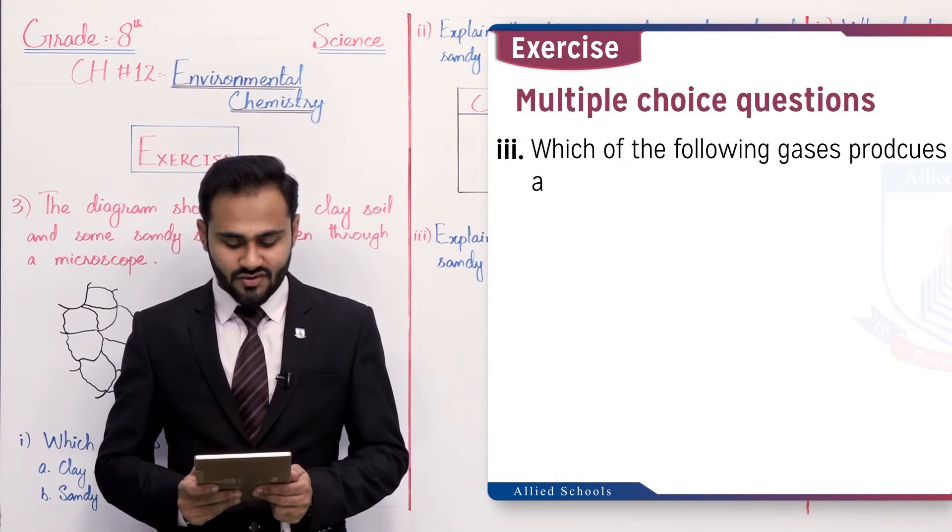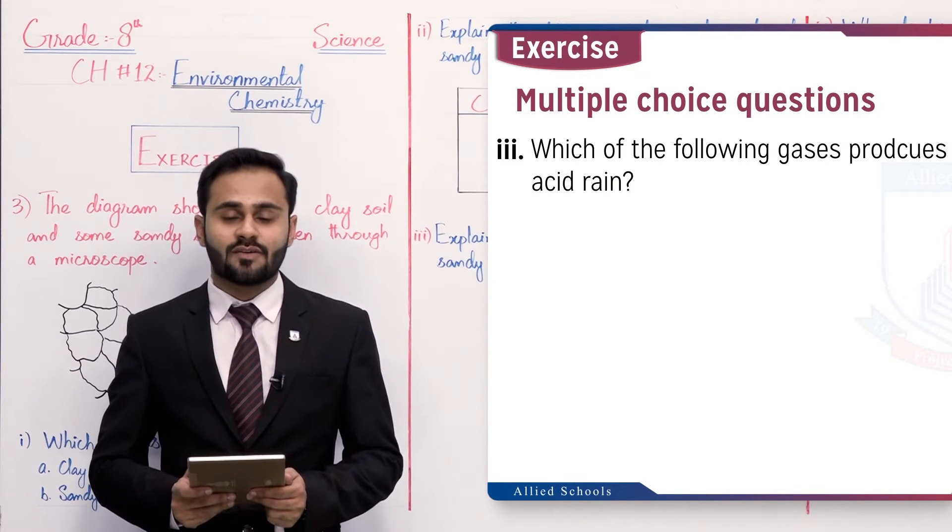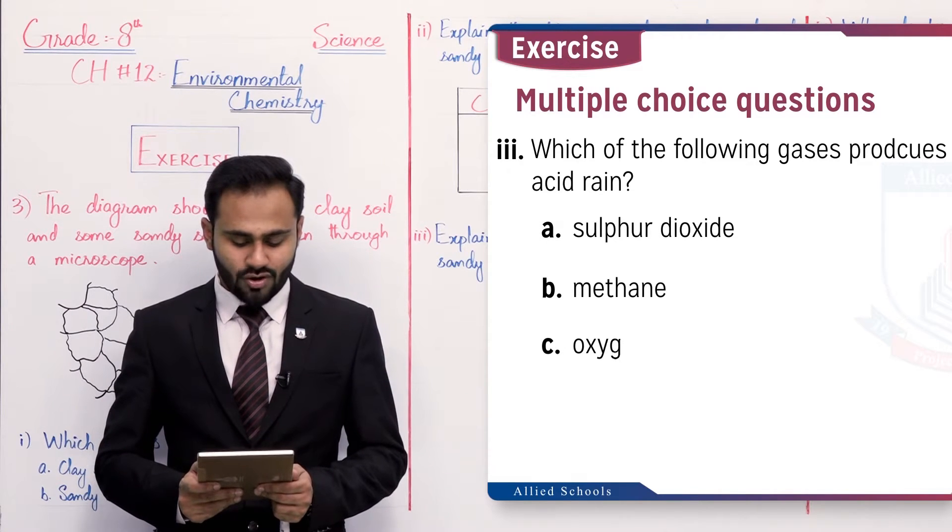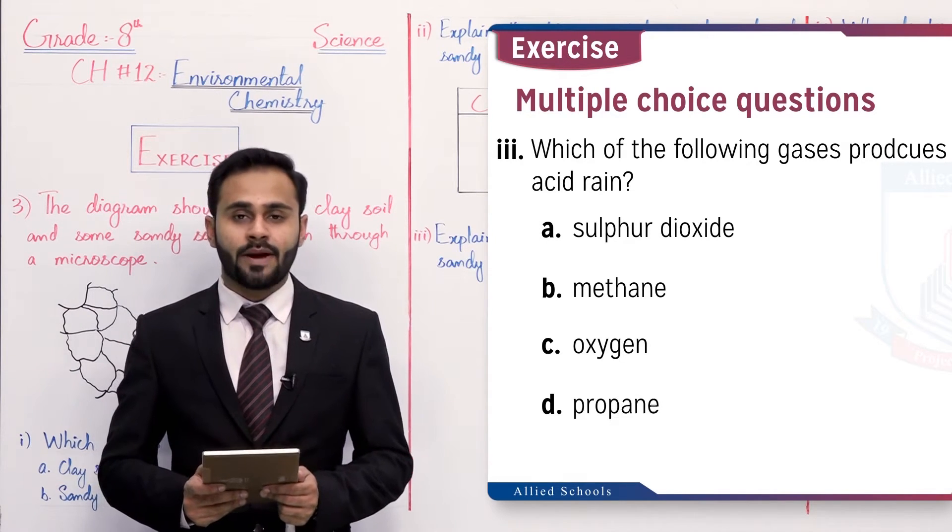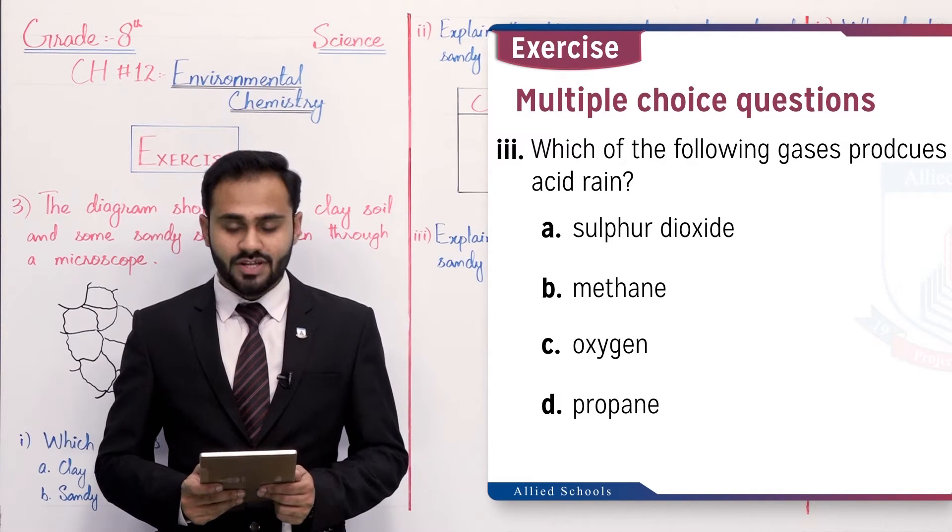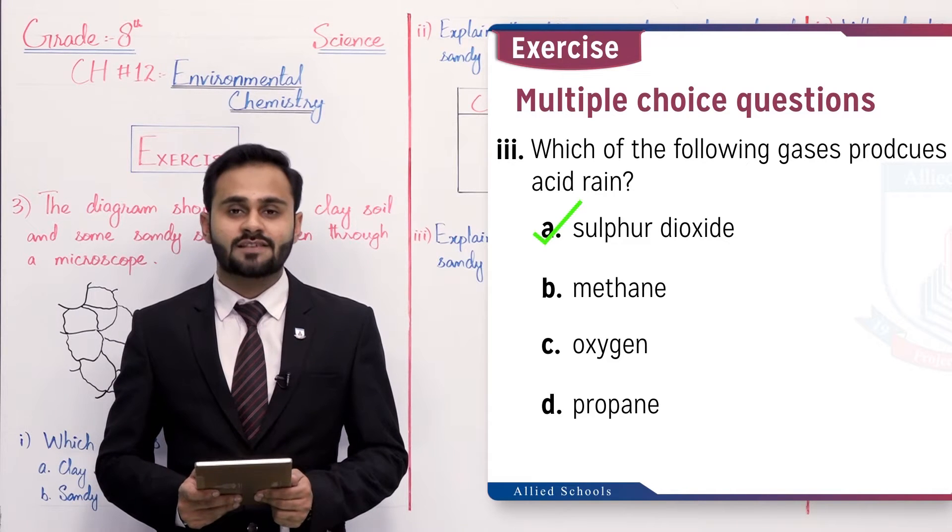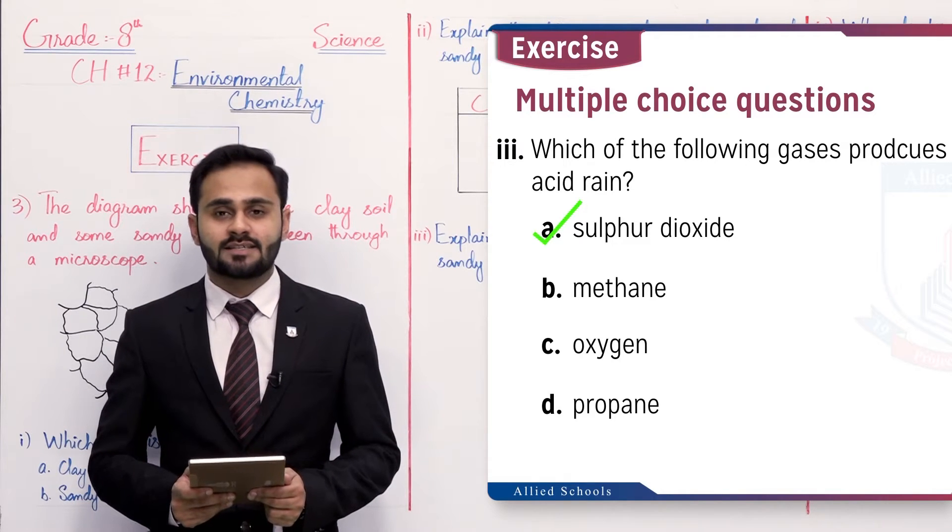MCQ number three: which of the following gases produce acid rain? Konsi gases acid rain produce karti hai? Option A: sulfur dioxide, B: methane, C: oxygen, and D: propane. The option A is correct which is sulfur dioxide. Sulfur dioxide yeh sulfuric acid produce karta hai jis ki wajah se acid rain hoti hai.